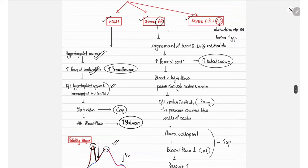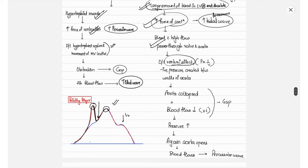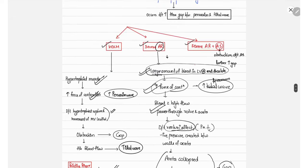In severe aortic regurgitation, there is increased end-diastolic blood volume in the left ventricle, leading to increased force of contraction via the Frank-Starling law and thus an increased percussion wave. As blood flows at high velocity through the left ventricular outlet, the Venturi effect creates negative pressure between the aortic walls, causing aortic collapse. This delays blood flowing from the left ventricle to the carotid, creating a gap between the percussion and tidal waves.